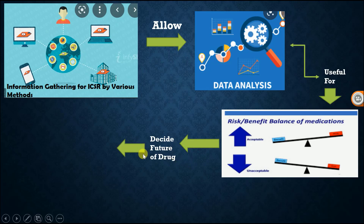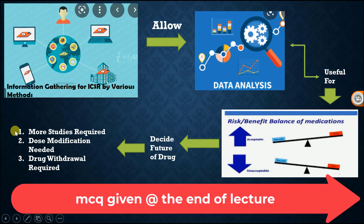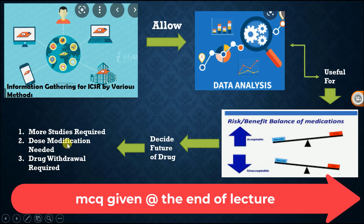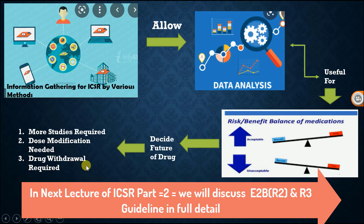After risk-benefit analysis, a decision is made about the future of the drug. If some data are missing, more studies may be required. If dose modification is needed, a dose modification study will be conducted. If there are a lot of serious, fatal, or life-threatening side effects, the drug will be withdrawn.